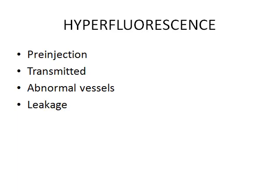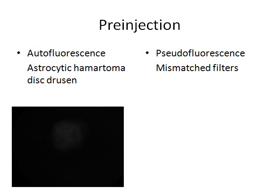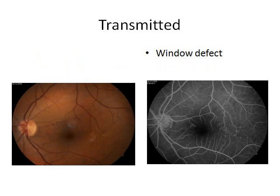There are four possible causes of abnormal hyperfluorescence: pre-injection, transmitted, abnormal vessels, and leakage. Pre-injection fluorescence is hyperfluorescence which can be seen before the dye is injected. It is caused either by structures that naturally fluoresce — such as astrocytic hamartoma or disc drusen, known as autofluorescence — or due to mismatched filters, i.e. pseudofluorescence. Transmitted fluorescence is an increase in visibility of the normal choroidal fluorescence due to absence or decrease of pigment in the pigment epithelium. It appears early, increases in intensity as the dye increases in the choroid, does not increase in size or shape during the late phase of angiography, and tends to fade and disappear as the choroid empties of dye.